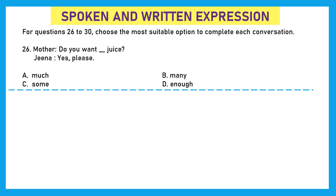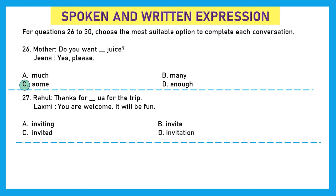Moving to the next section, that is of spoken and written expression. For questions 26 to 30, choose the most suitable option to complete each conversation. Question 26. Mother: Do you want blank juice? Gina: Yes, please. Now here we are talking about juice which we cannot count. So what should be the perfect answer for that? Much juice, many juice, some juice, or enough juice. The right answer here should be option C. Do you want some juice?